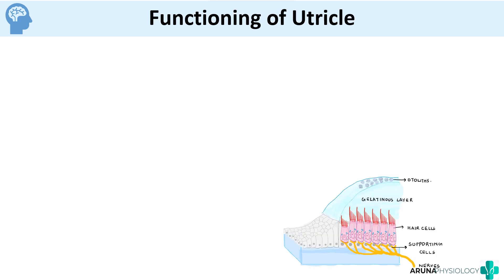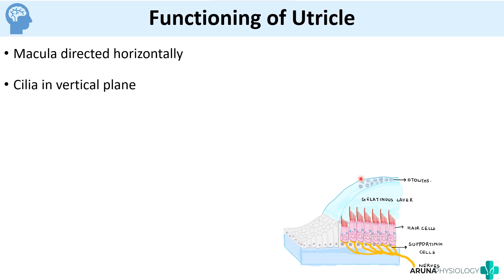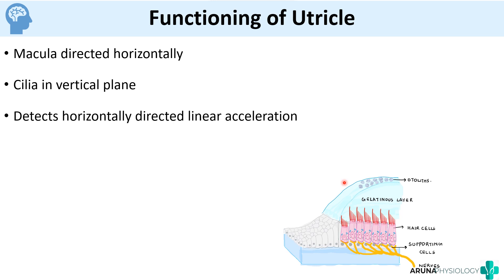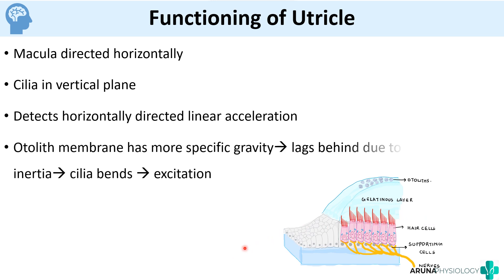Inside the utricle, the macula is directed horizontally, which means the cilia are in the vertical plane. This is how it detects horizontally directed linear acceleration. When we are moving in a car horizontally, that movement is detected by the macula present in the utricle. Because the otolith membrane has greater specific gravity, it lags behind due to inertia, the cilia bends, and that causes excitation. The opposite occurs when the direction changes. This is how linear acceleration is detected by the utricle, because its macula is oriented horizontally.